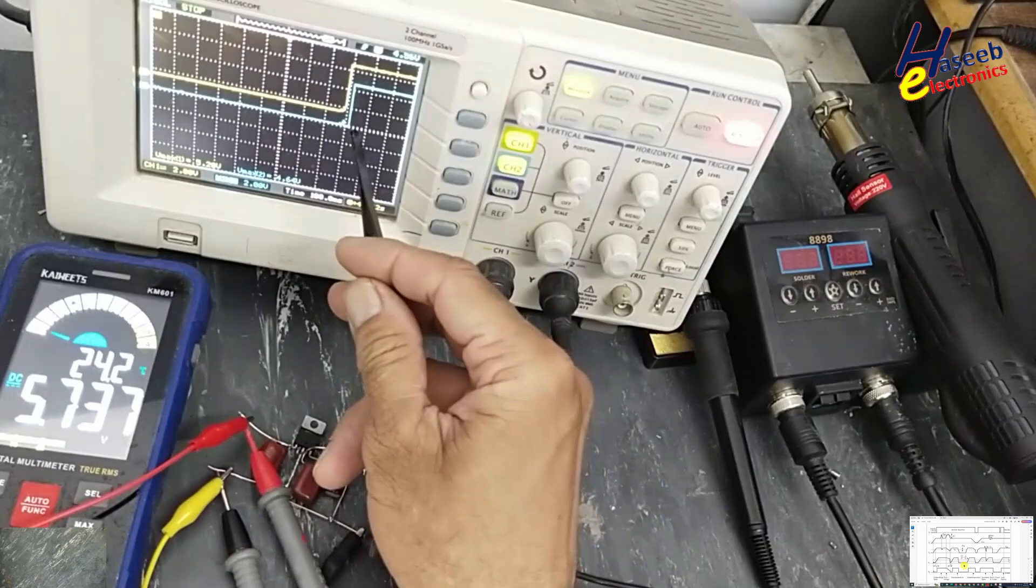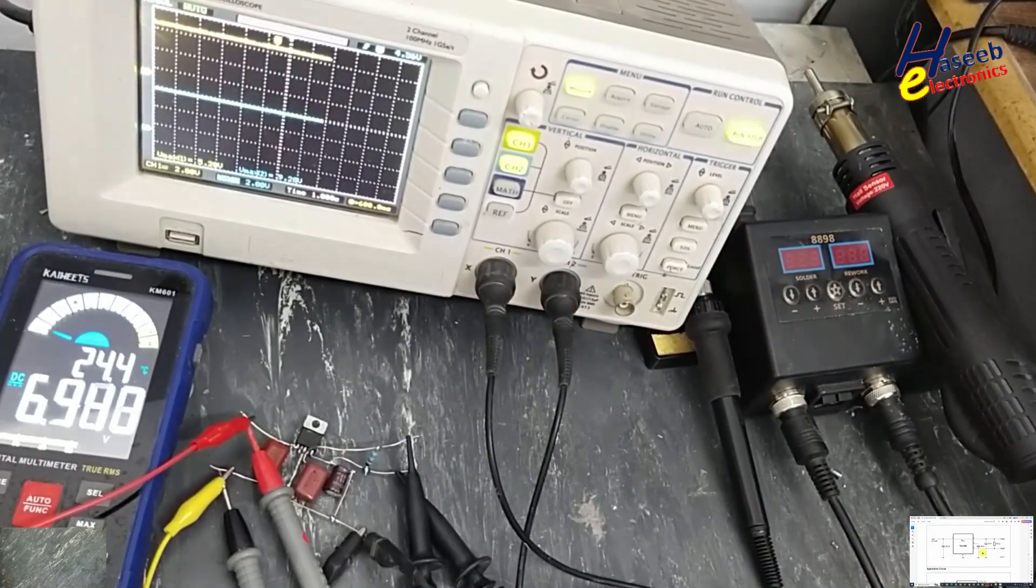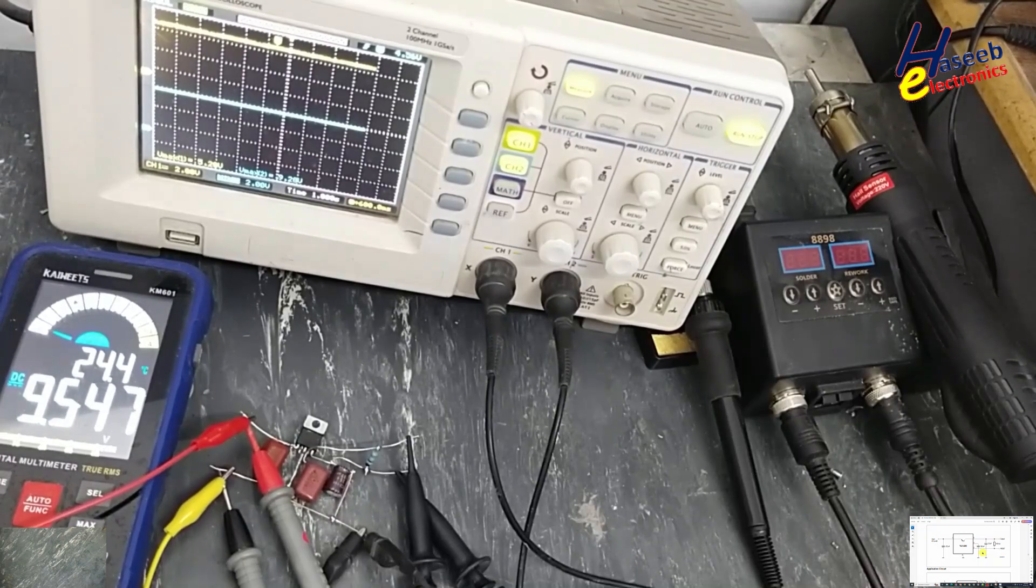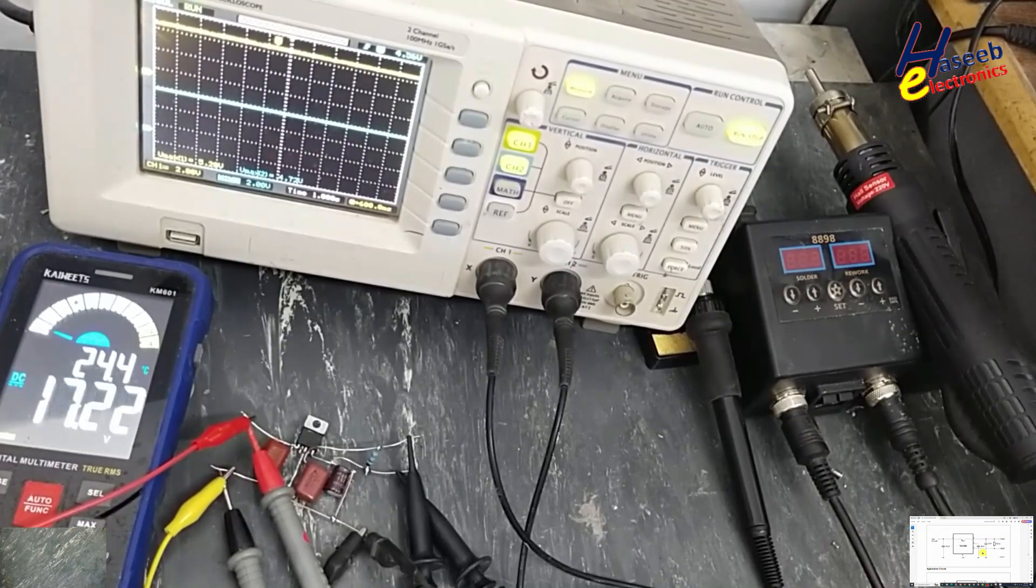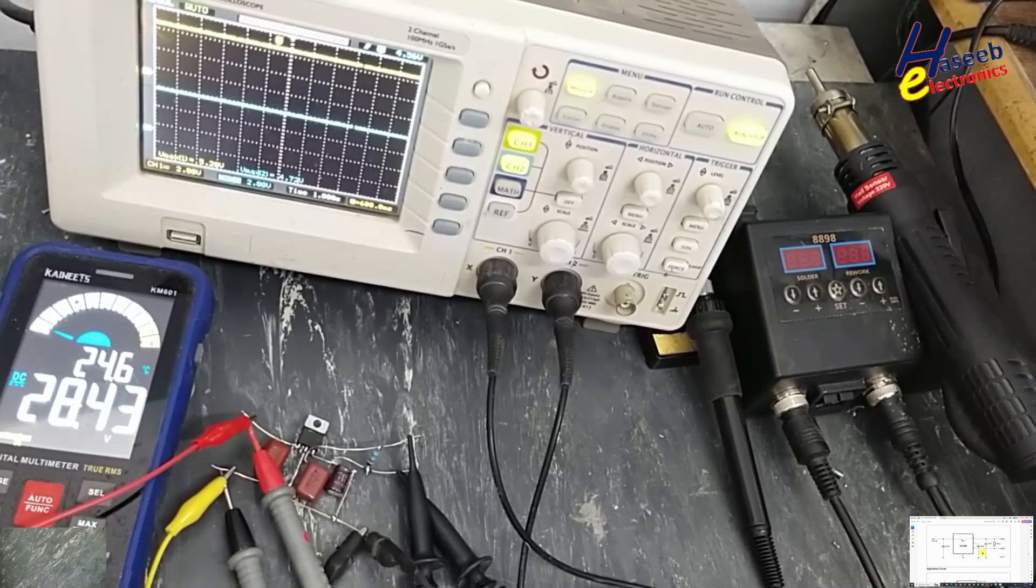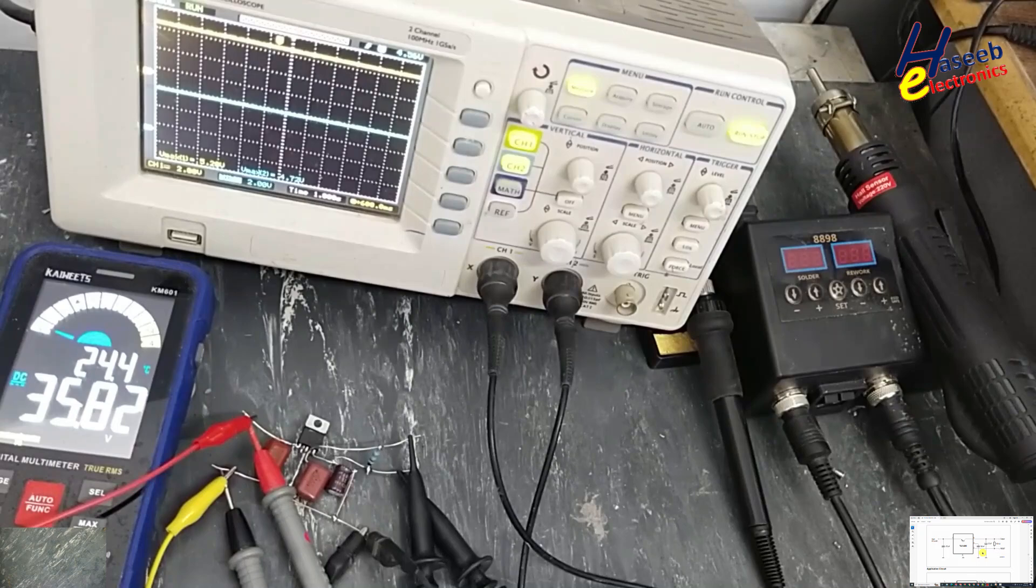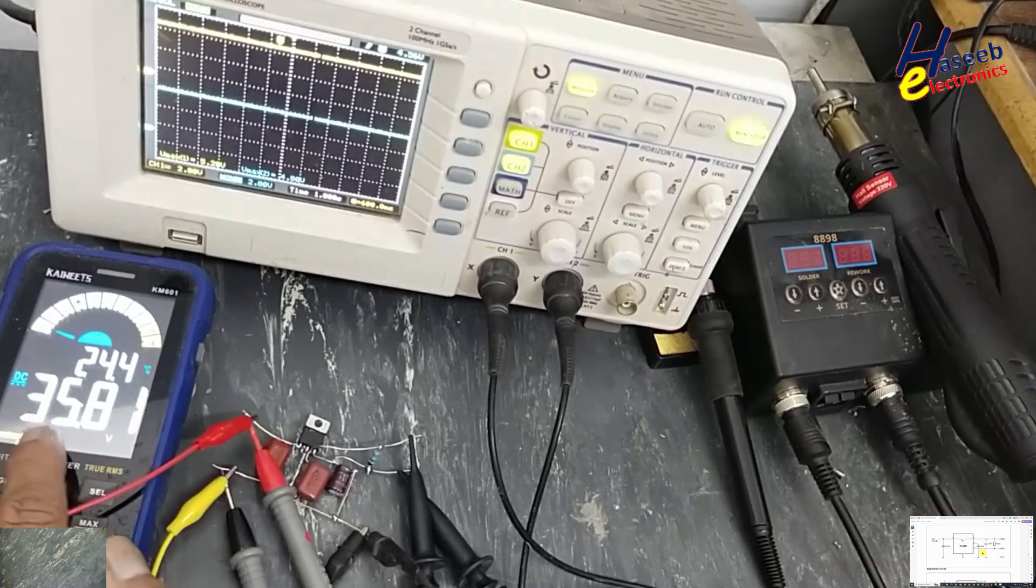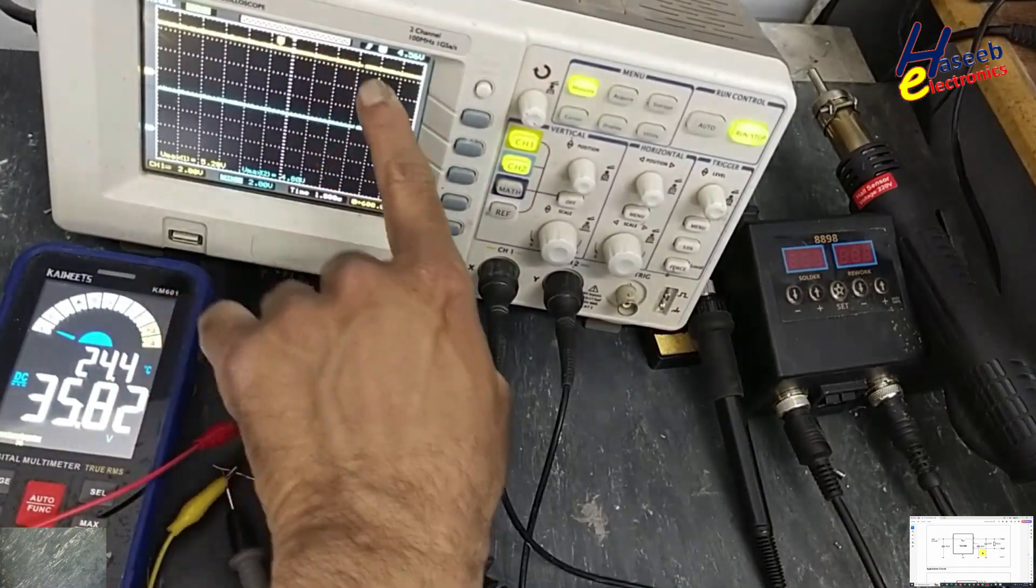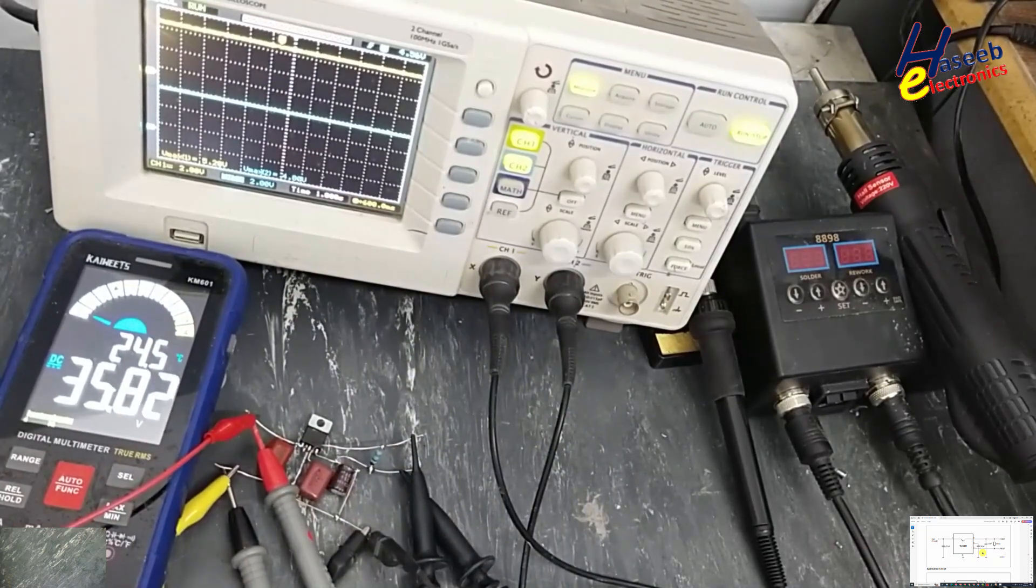If the input voltage is increasing, the output will remain stable. Input 35 volts, the output is regulated 5.2 volts. The maximum allowed limit is 42 volts. Input 40 volts, the output 5.2 volts.